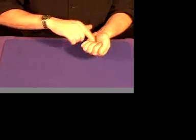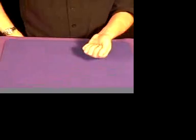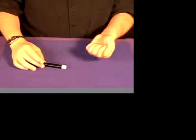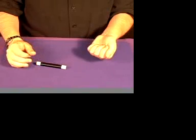Take the die, place it in the little hand, go inside your little pocket and produce a little magic wand. Give it a little wave, a little tap, and it changes into, you guessed it, a little die.